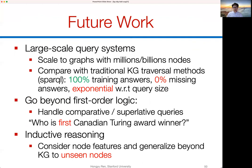Future work includes: how to scale to large-scale knowledge graphs with millions or hundreds of millions of entities; how to include additional reasoning operators, for example comparative queries beyond first-order logic; and how to handle inductive reasoning by incorporating node features and generalizing beyond entities seen in the knowledge graph — specifically, can we learn to reason with missing entities, not only missing relations? Thank you very much.